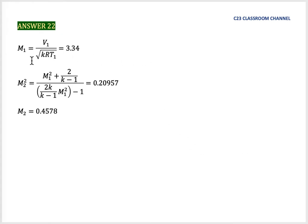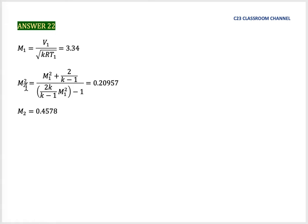First, we can calculate the value of Mach 1 because we already know the value of velocity before the shockwave and we know that we are dealing with air, so K is 1.4 and R is 287. The temperature is also given in the question. We can say that before the shockwave, the Mach number is 3.34. Using this equation, we can calculate the Mach number for situation number 2: M2 squared is equal to 0.20957, and M2 is equal to 0.4578.